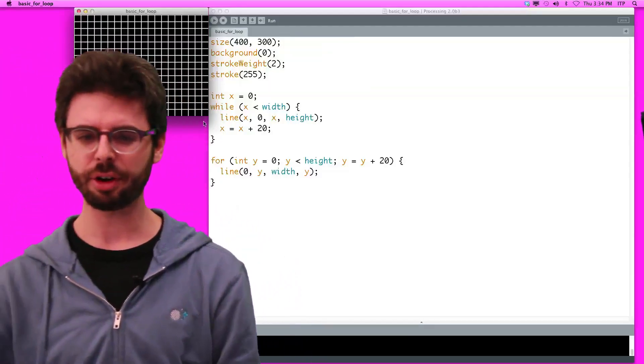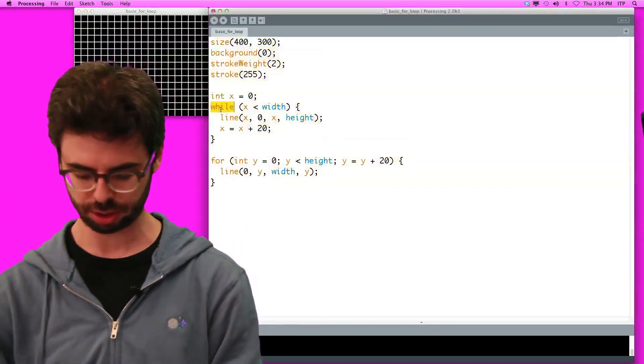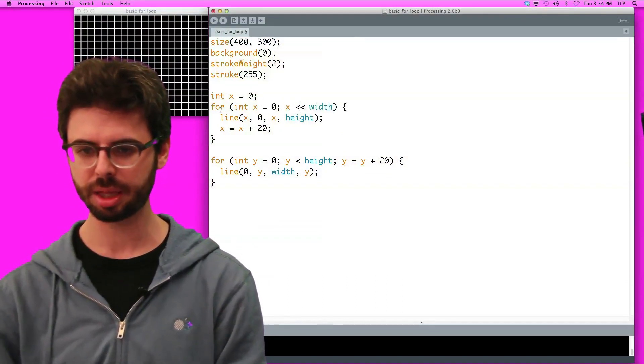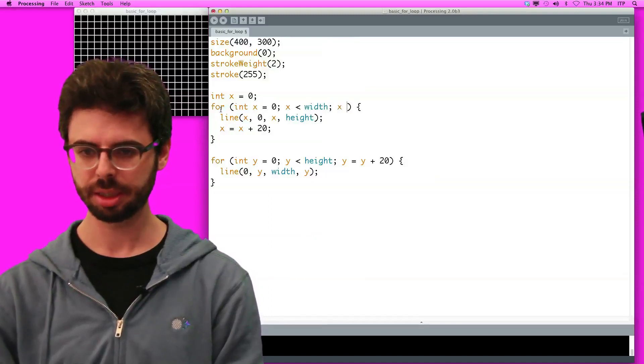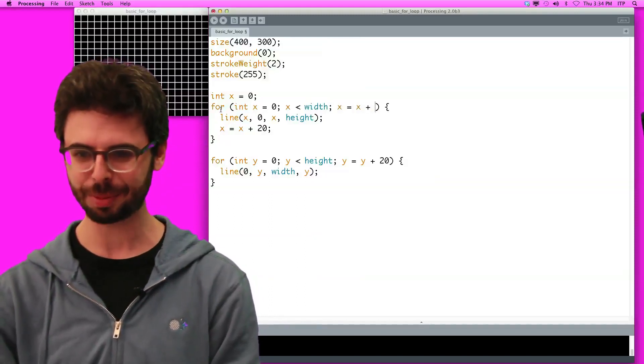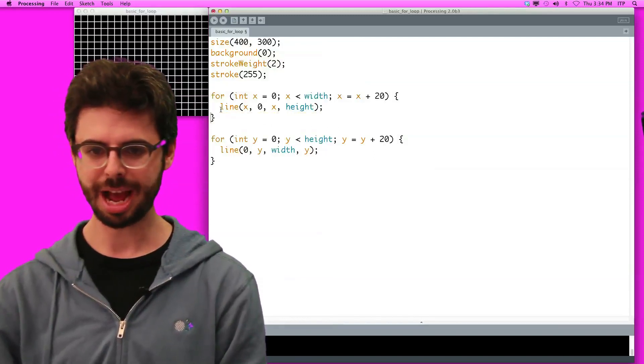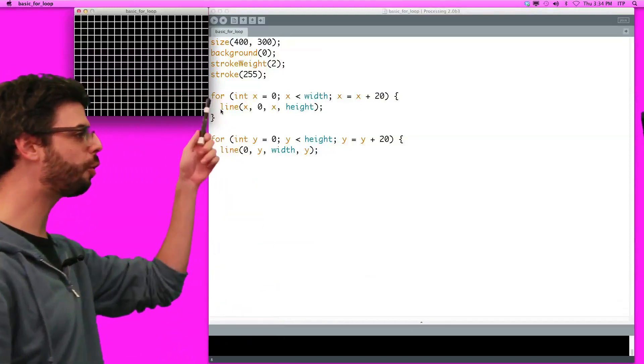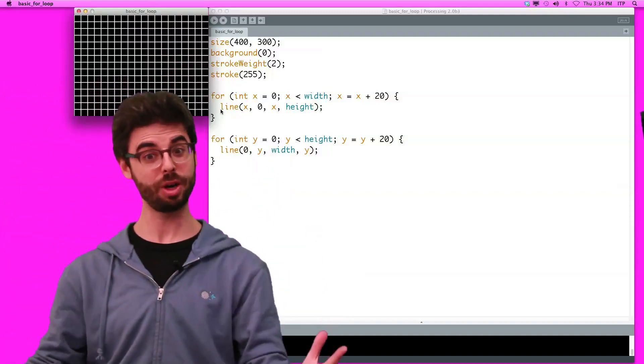OK, so first thing first, let's actually just make both of these for loops, because I think that'll be easier to look at. So now we have a for loop, int x equals 0, x is less than width, and then x equals x plus 20. And now we have both these loops, and look what we've got. We've got two for loops, one for the horizontal lines, one for the vertical lines. We have our grid pattern.